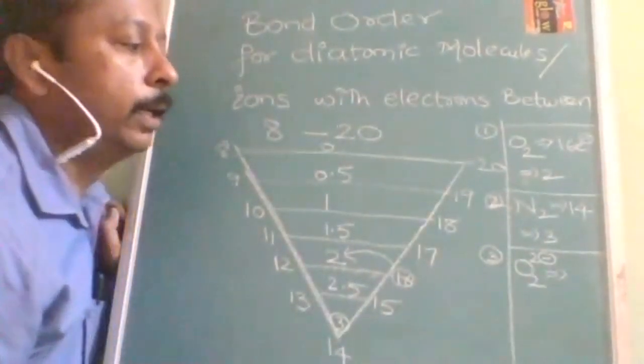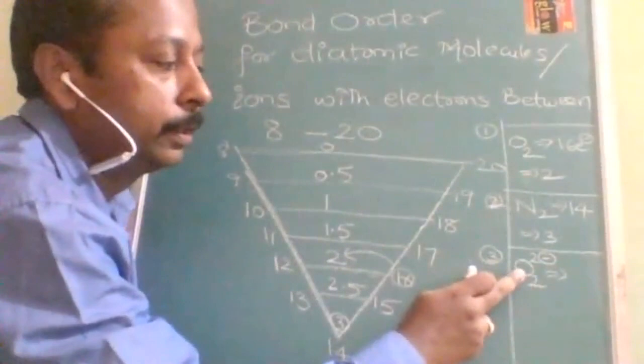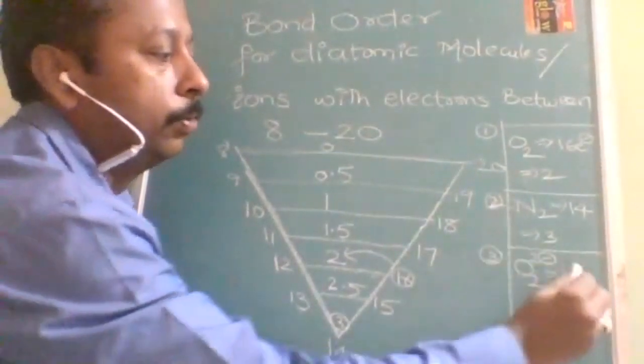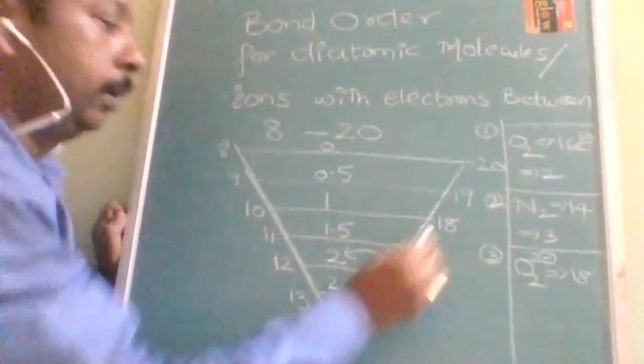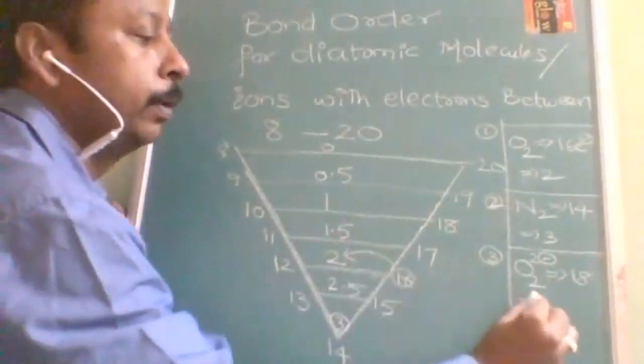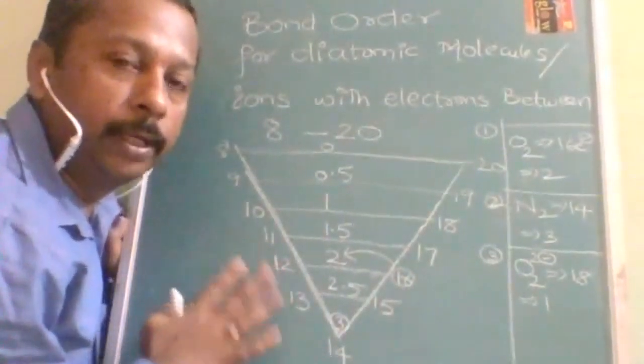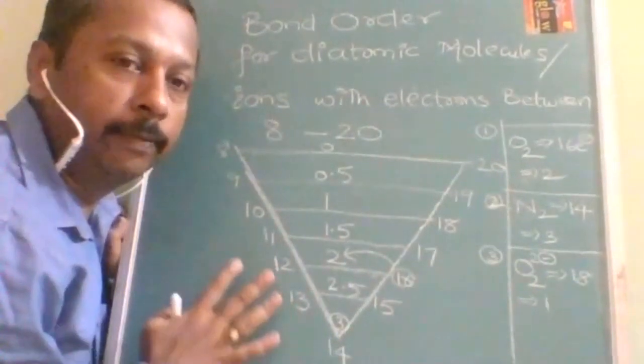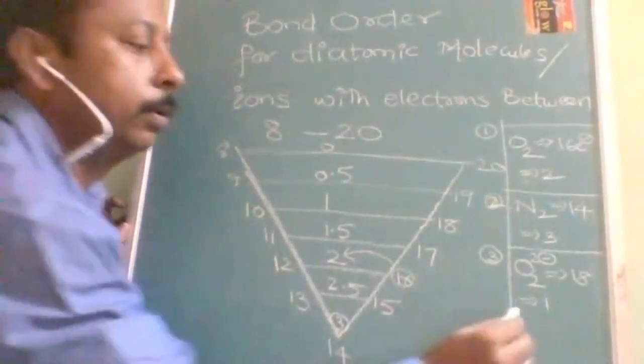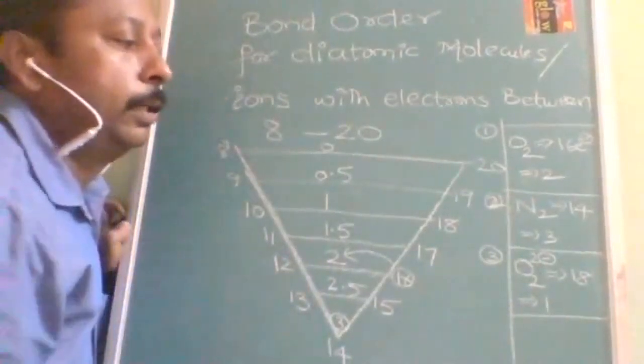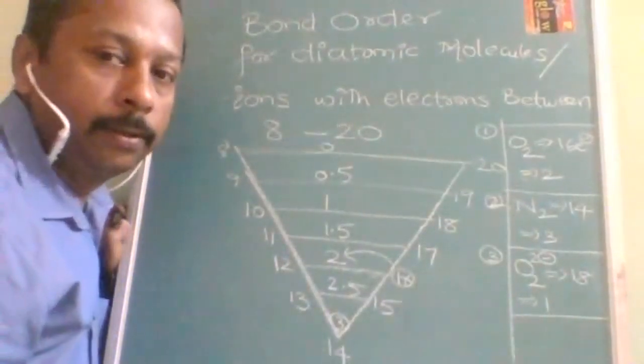OK, so let us see if we are getting it or not. 2 oxygen, 16 electrons plus 2, 18 electrons. OK, 18 electrons: 1. So am I doing anything? If this diagram is there with you, it is going to be very, very easy for you people. Understood? Now, this is one example of an ion.